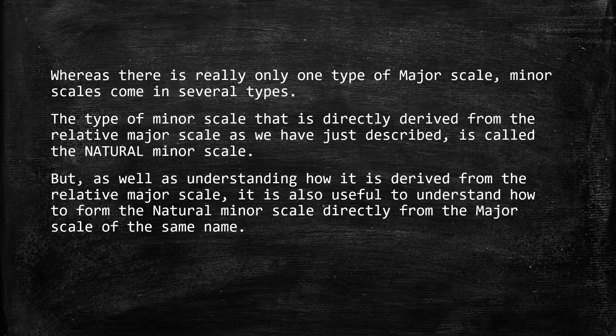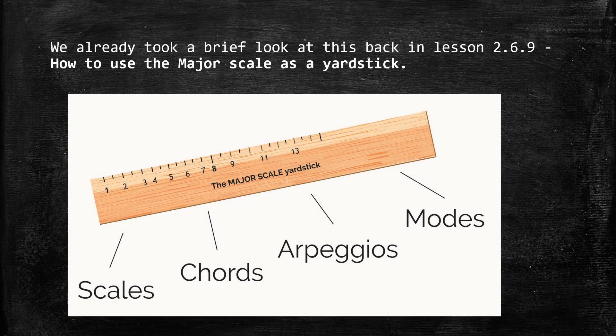Whereas there is really only one type of major scale, minor scales come in several types. The type of minor scale that is directly derived from the relative major scale, as we have just described, is called the natural minor scale. But as well as understanding how it is derived from the relative major scale, it's also useful to understand how to form the natural minor scale directly from the major scale of the same name.